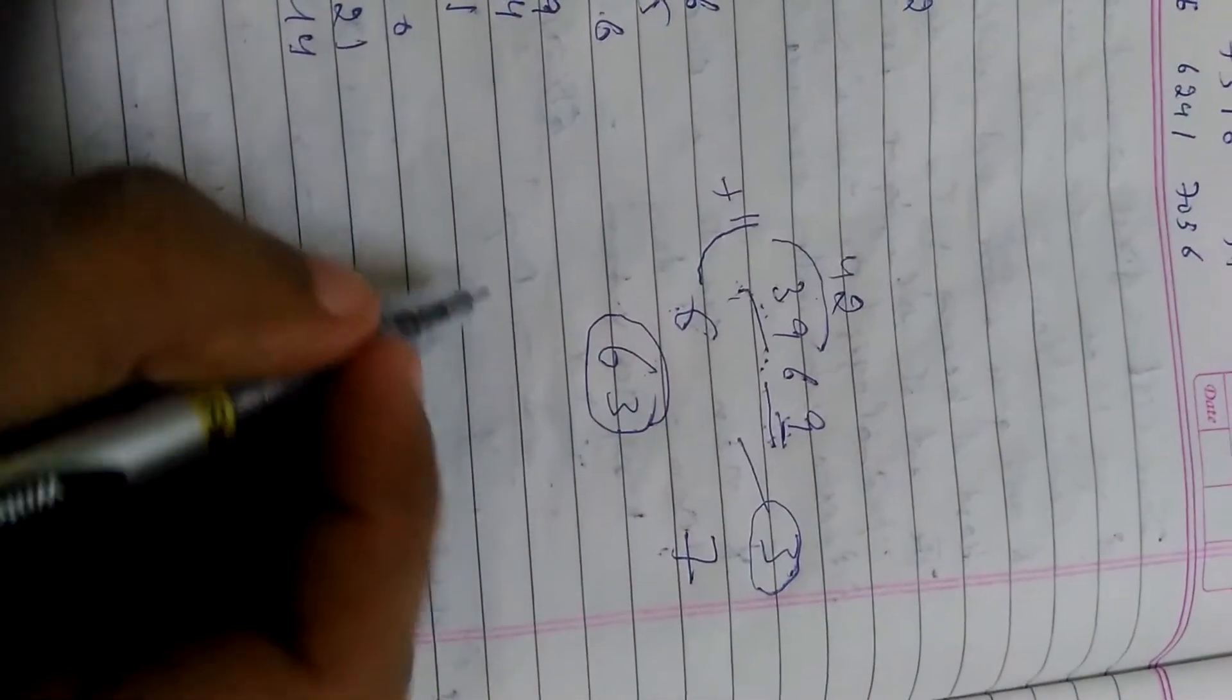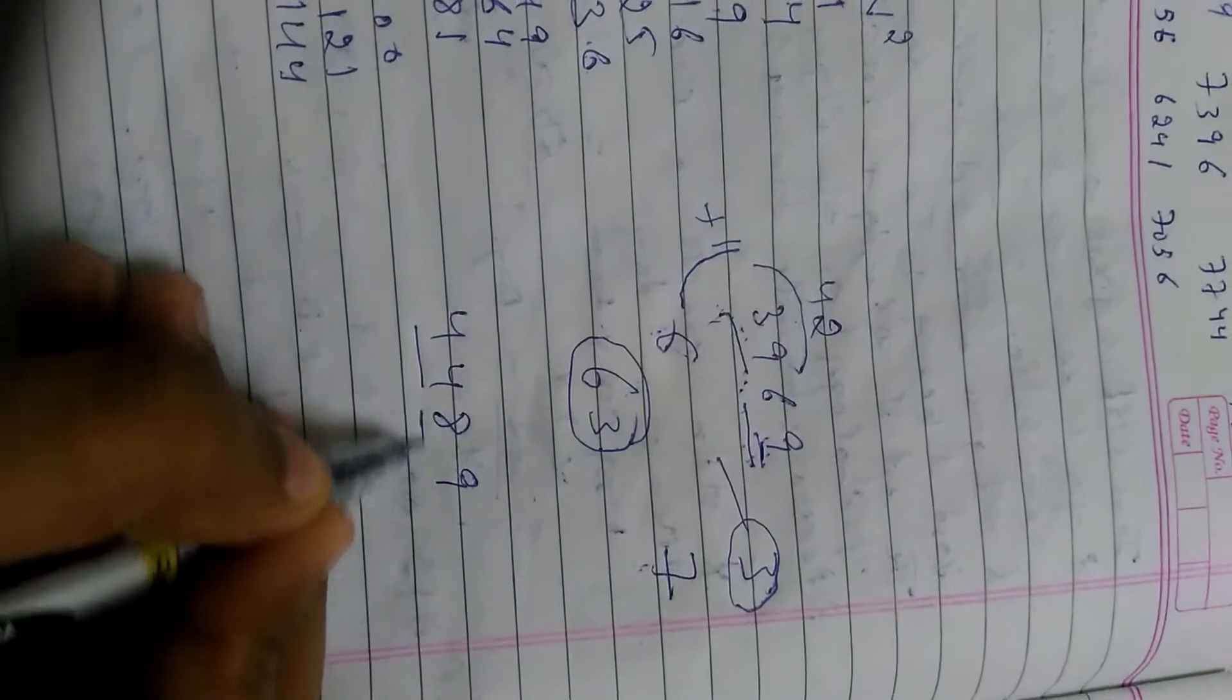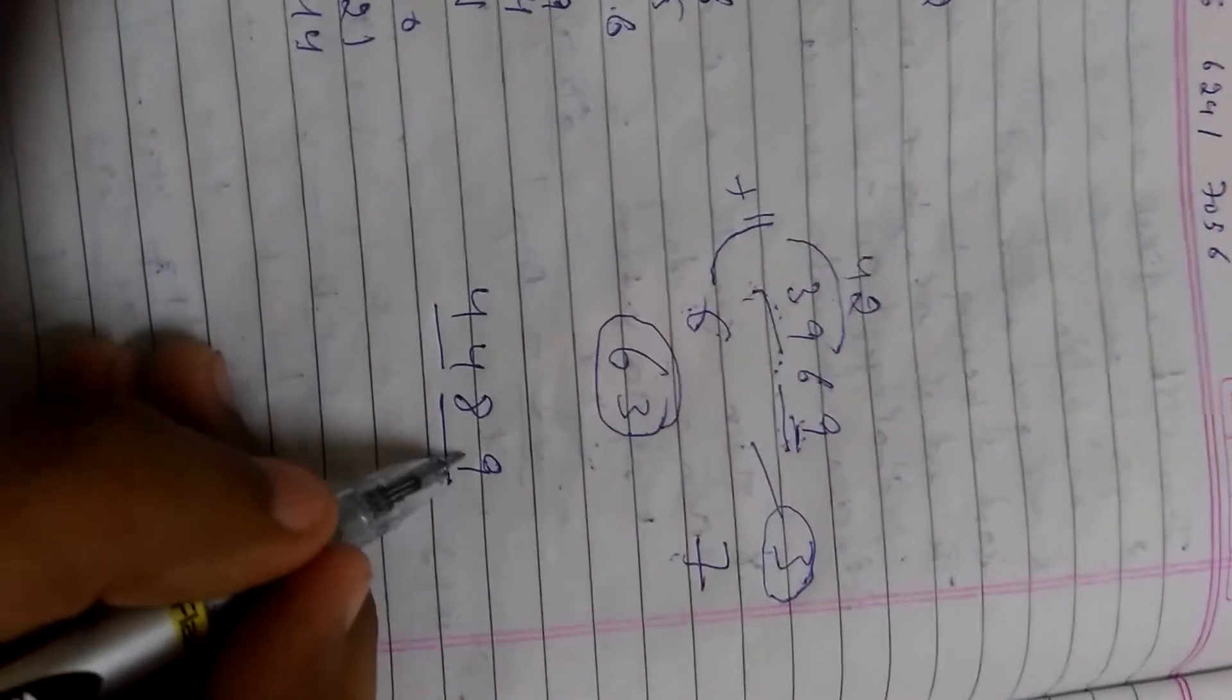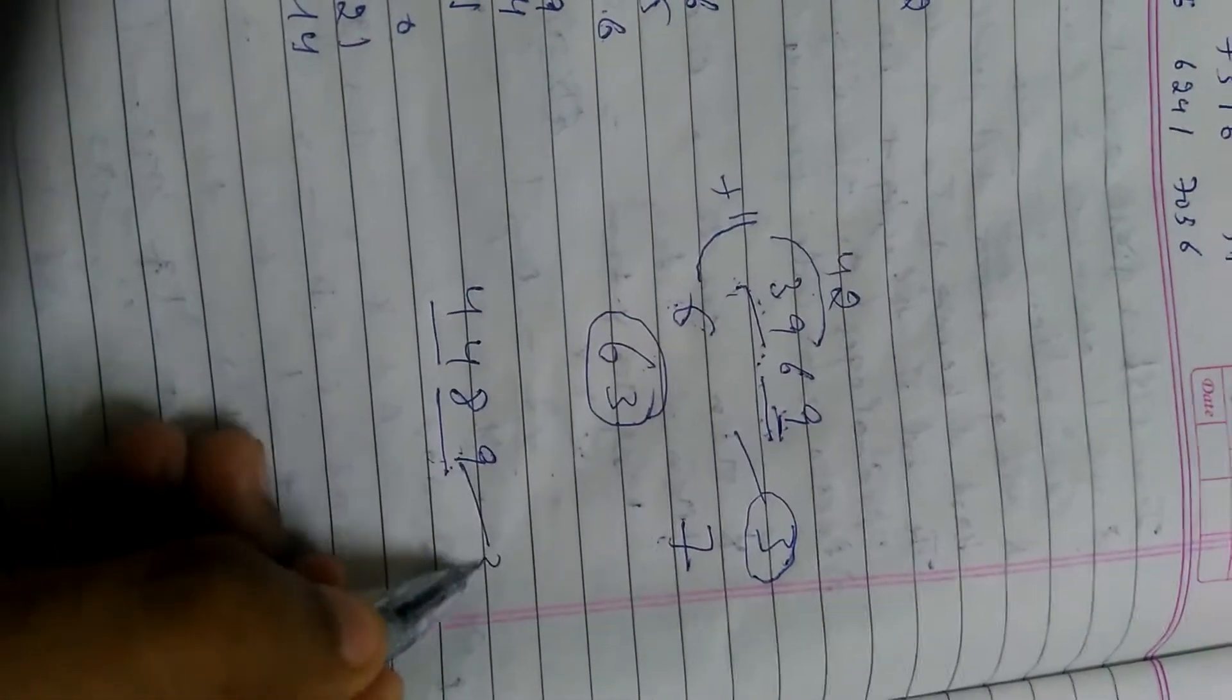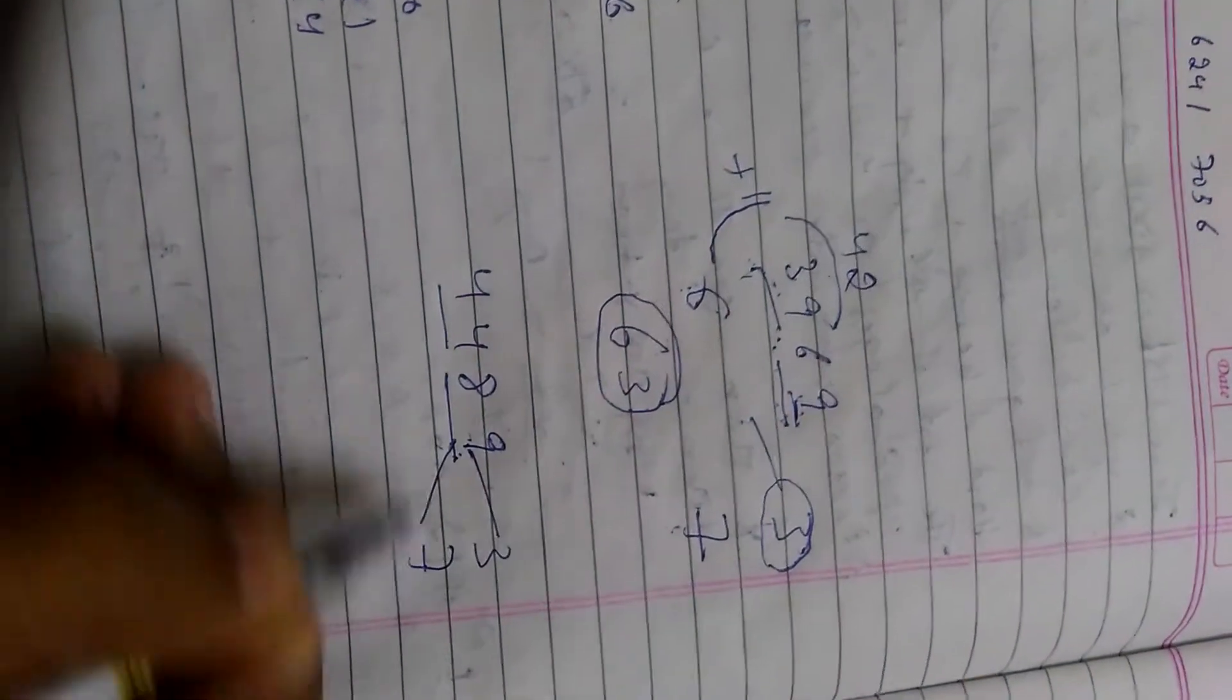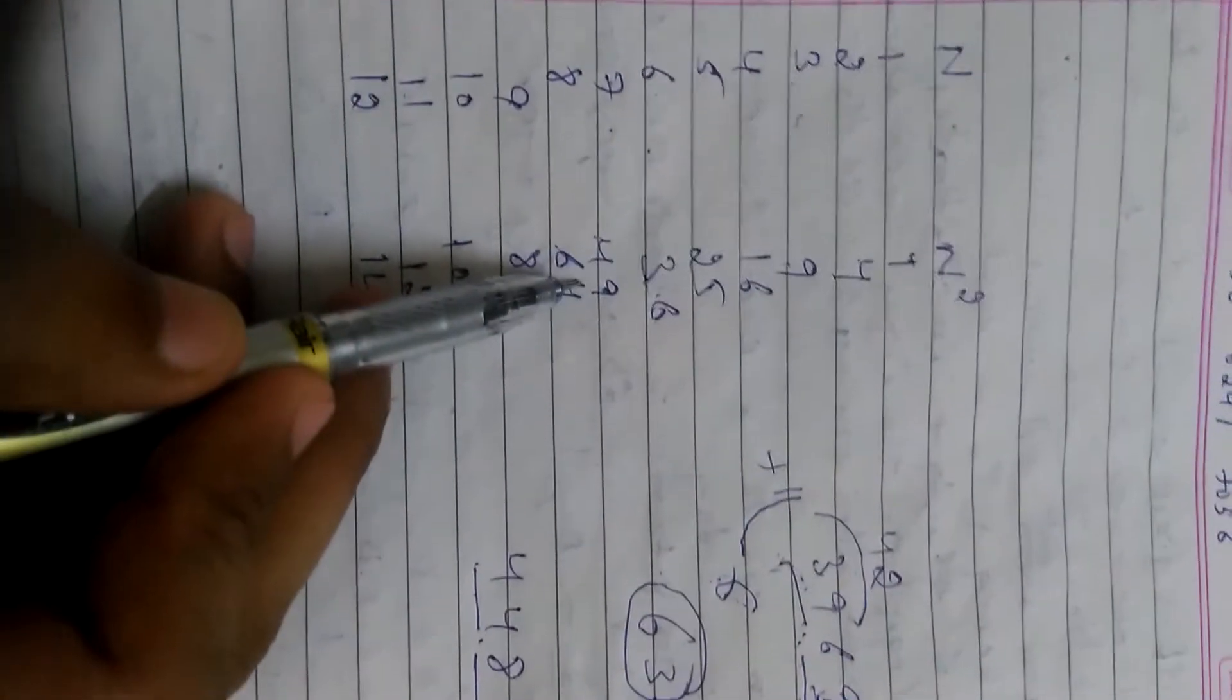Let's consider another number, 4489. Again we divide the number into two parts. The last digit is same as 9 in the previous scenario, so last digit must be 3 or 7. 44 lies between 36 and 49, that is 6 square.